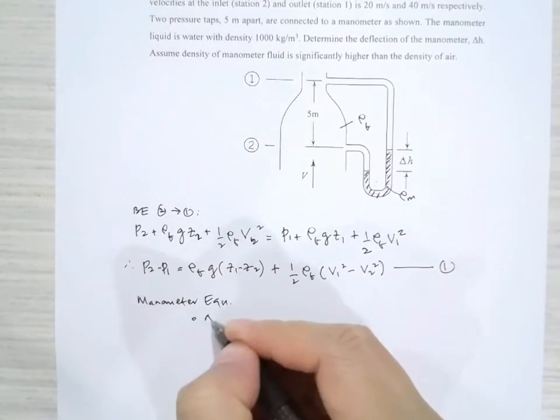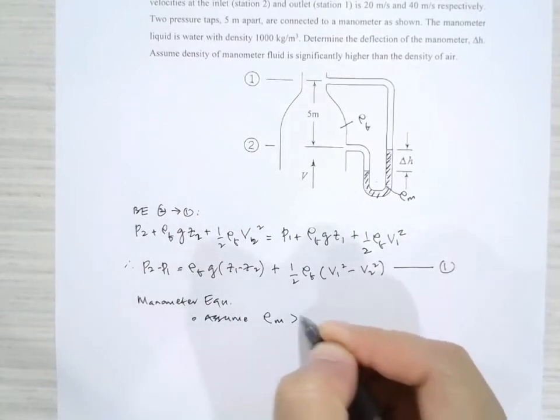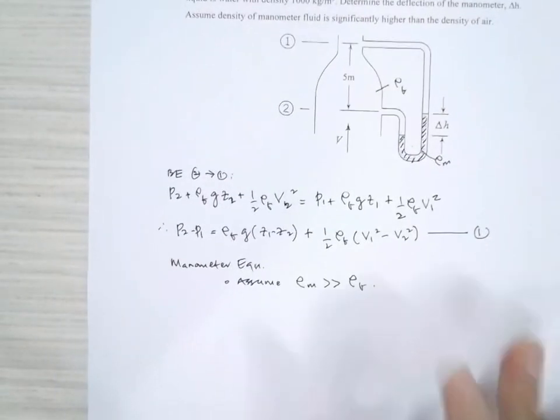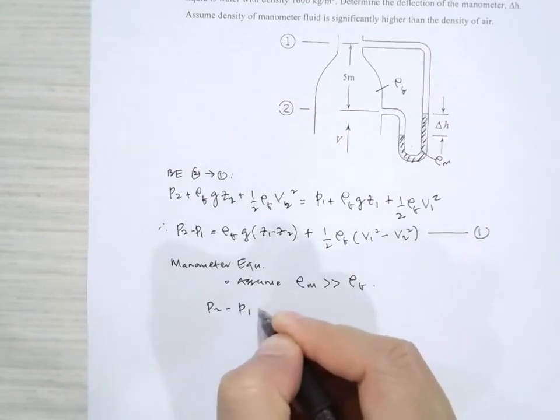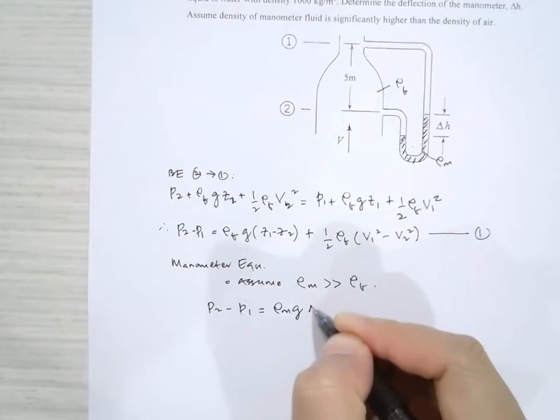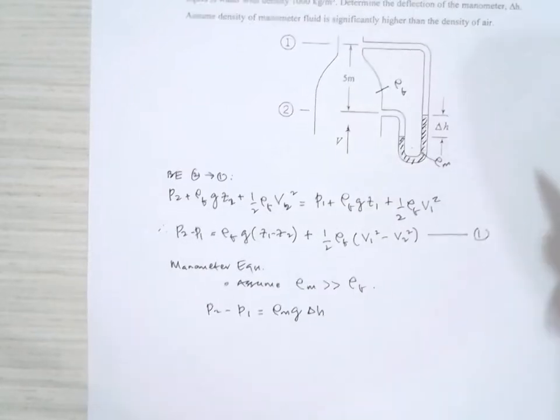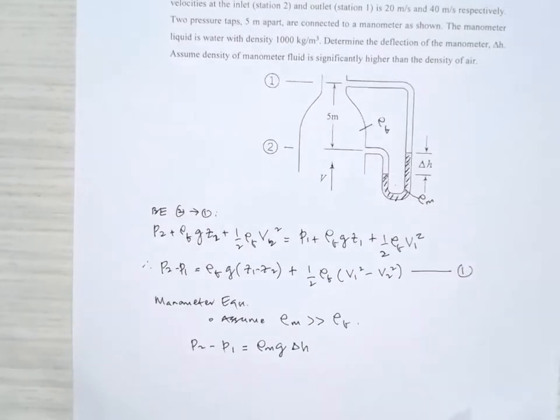Of course we assume rho manometer is a lot bigger than rho fluid, so we can write manometer equation which says that P2 minus P1 must also be equal to rho M G delta H, where H is the deflection of the manometer fluid.